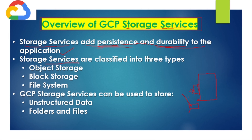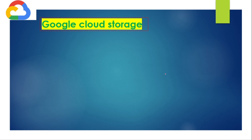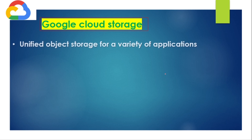Storage services are classified into three types: object storage, block storage, and file system storage. GCP also offers storage services that can store unstructured data as well as folders and files.